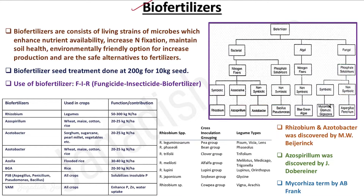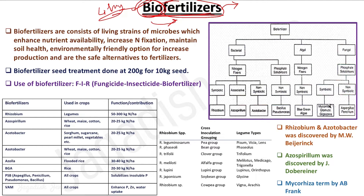In this brief lecture we are going to talk about biofertilizer. If you break down the term biofertilizer, it comes to bio and fertilizer. Fertilizer means any substance used for supplying nutrients to the plant. Bio means associated with a living thing. So any living thing that acts as a fertilizer — supplying nutrients to the plant — is considered a biofertilizer. Biofertilizer consists of living strains of microbes which enhance nutrient availability, increase nitrogen fixation, maintain soil health, and are an environmentally friendly option for increasing production.